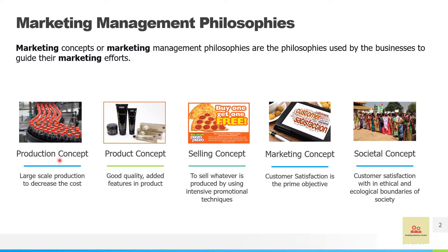Under this category, the very first is production concept. This is the concept where a producer or marketer decides to have large-scale production so that cost can be decreased. In this case the product will be cheaper, easily available in the market, and can be bought by a large number of people. The marketer plays with the quantum of the product — more quantity sold means more profit earned.